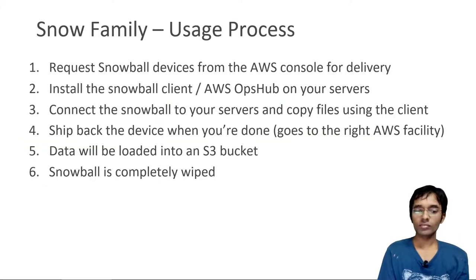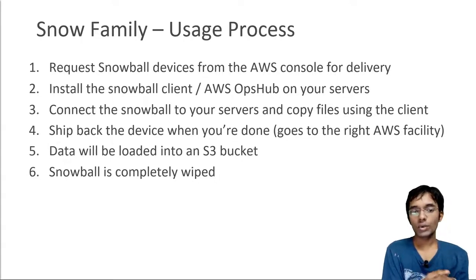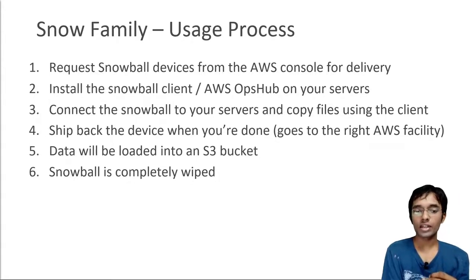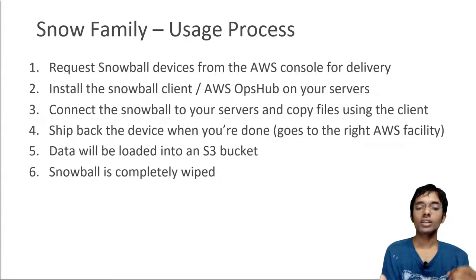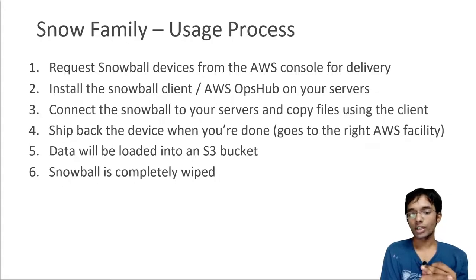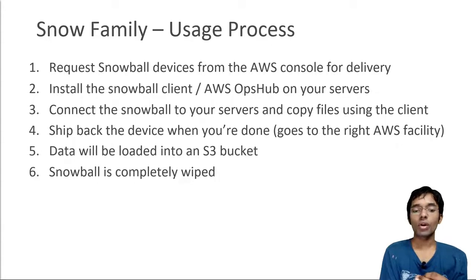To use a Snow Family device: request it from the console, then install the Snowball client or use AWS OpsHub on your servers. Connect the Snowball to your servers and start copying files using the client. When ready, ship the device back to AWS — it will go to the right facility thanks to the e-ink marker. Data is loaded into an S3 bucket and the Snowball is completely wiped according to the highest security measures.